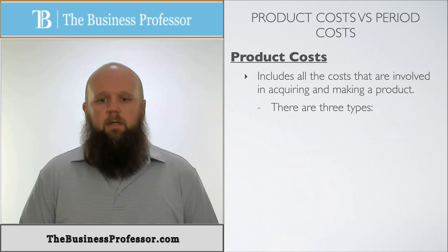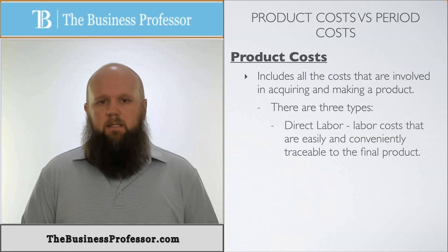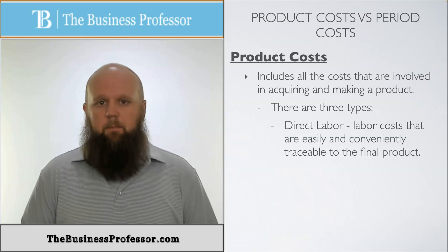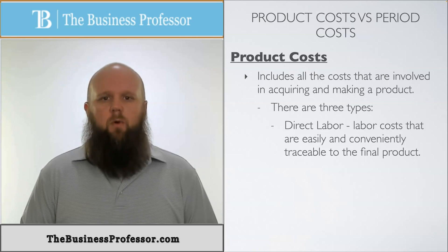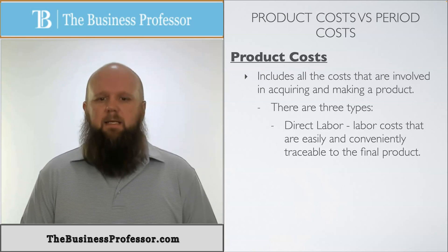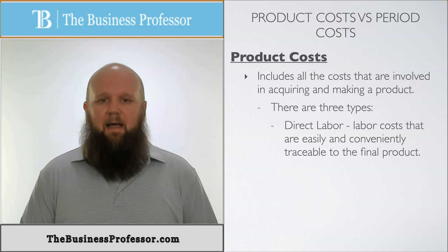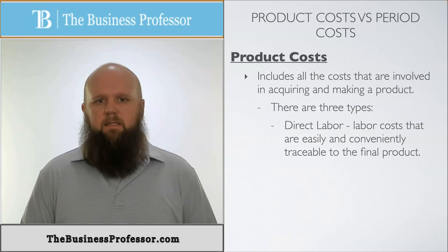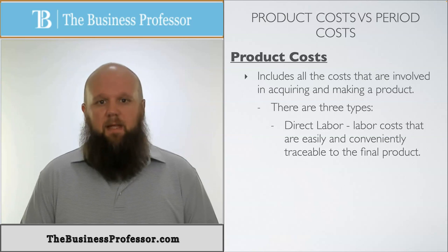The second one is direct labor. Direct labor are the labor costs that are easily and conveniently traceable to the final product. So again, this is a direct cost because it says direct in the name. But this is the cost of the wages or salaries of the people who are actually making the product. A lot of times direct labor is called hands-on labor. That's kind of how you can categorize it, the people who actually have their hands on. The foreman probably would not be considered direct labor because they don't actually have the hands-on in building the house. We're talking about the employees that have the hands-on.